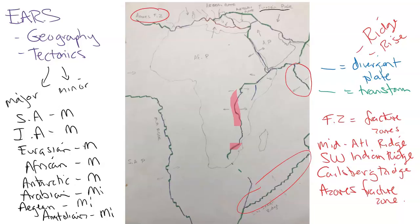There are also convergent plate boundaries on this map, so we have all three: divergent, transform, and convergent. Convergent is up here in the Mediterranean, where the African plate converges with the Eurasian plate and other small plates like the Aegean and Anatolian plates, creating volcanoes around the Mediterranean such as Mount Etna, Stromboli, Vesuvius, some volcanoes in Greece, Crete, Cyprus, and Turkey, plus mountain belt orogeny in Turkey. So we really have everything on this map, plus the Continental Rift Valley system.